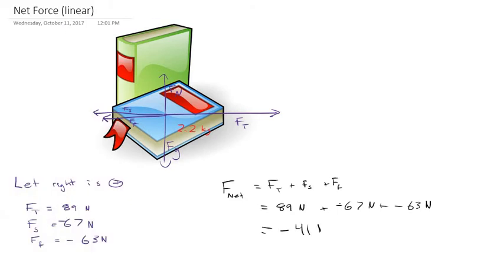So 89 minus 67 minus 63 means there's a net force of negative 41 newtons acting on this textbook. Negative because it's in the direction, unfortunately for me, of the students. So the students are gaining the upper hand here—they're managing to gain control of this textbook and they have the superior force of 41 newtons on their side.